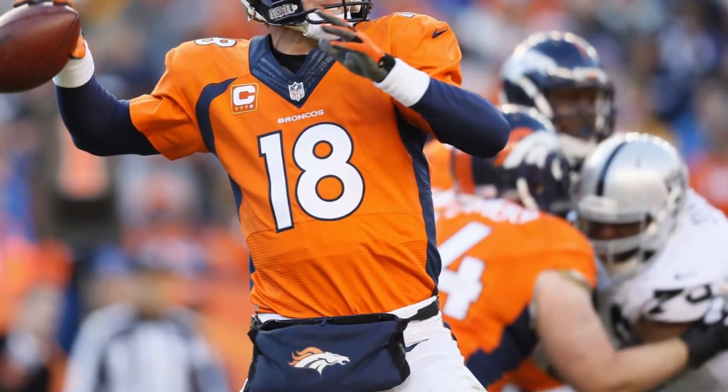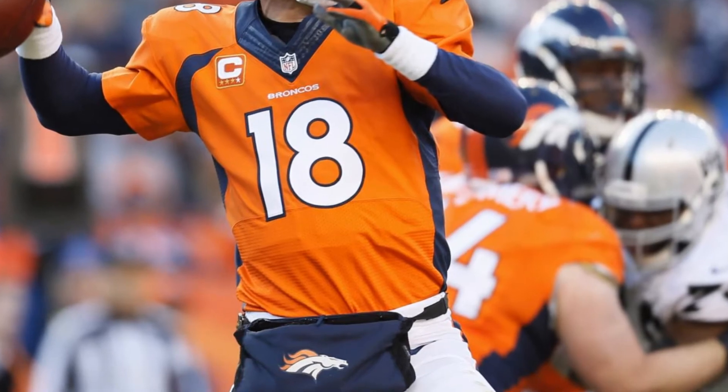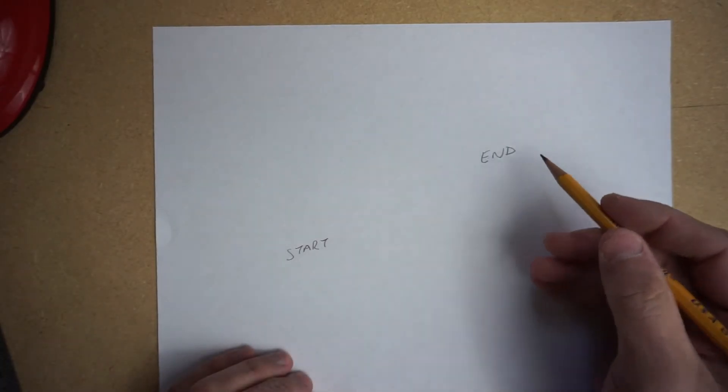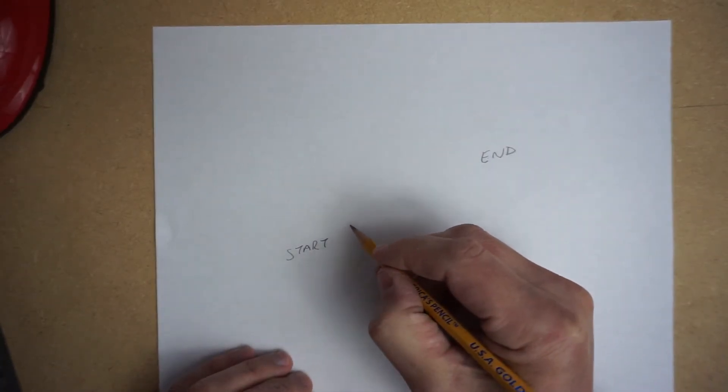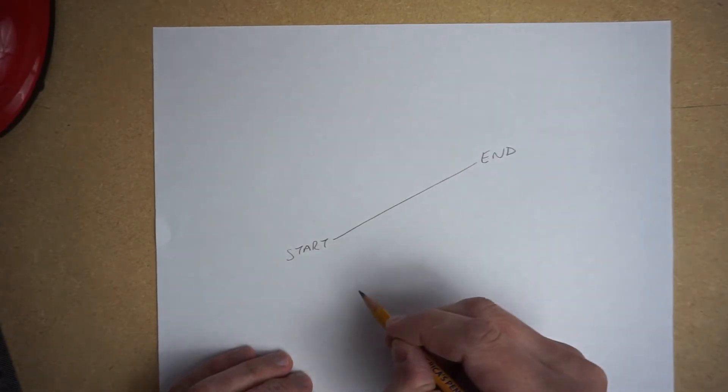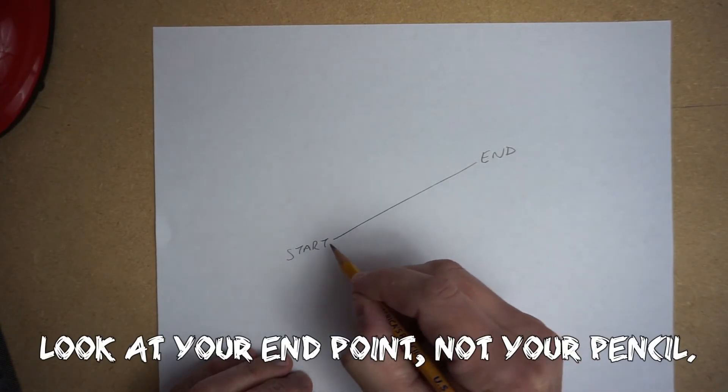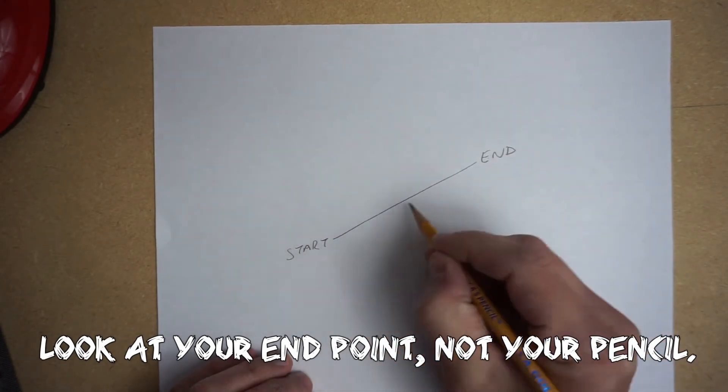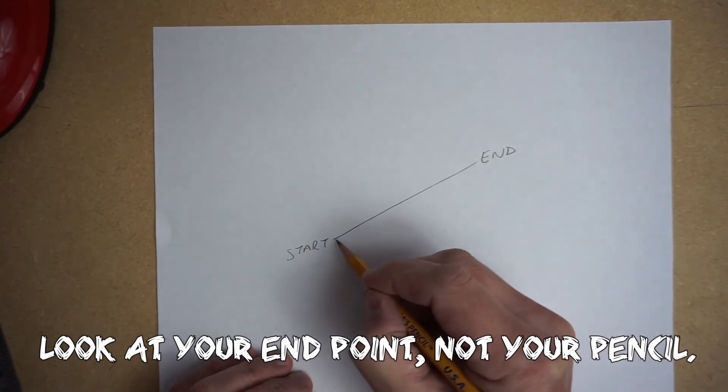If you think about a baseball pitcher or quarterback, they always look where they want their ball to go when they throw it. They don't look at the ball as they throw it, they look at where they want it to go. It works the same with drawing. So just a straight line like that, knowing where you're gonna end and looking there rather than looking at your pencil. That's the first thing.